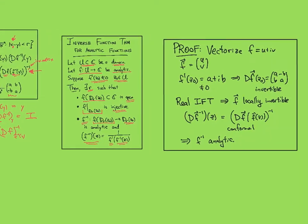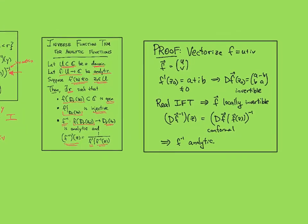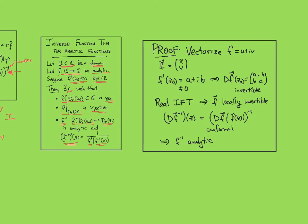So here's the proof that I already said out loud. You would start with your f equals u plus iv and then think of it as a vector. And we'll also write out the derivative of f as a plus ib. So this vector version of f has derivative matrix given by this conformal matrix.